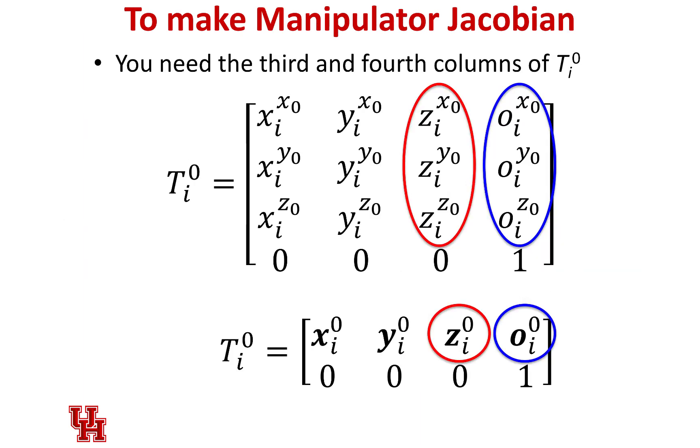How this works is every time you want to make a manipulator Jacobian, you need to have the transfer matrix, T i in frame 0. And from that matrix, the only thing that we need is the third and the fourth column. We need the third because that tells us which direction, the orientation of our z-axis of frame i in the base frame. And we need the fourth axis here because that tells us where is the coordinate frame i according to the base frame. So we only need these two vectors, v i in frame 0 and o i in frame 0. With that, we can start doing a lot of math.